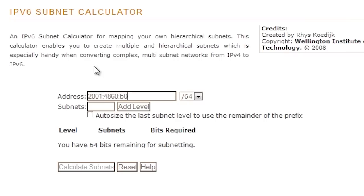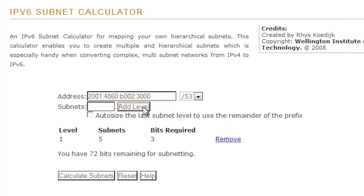To use the tool, enter in the address and select the network prefix. For the first level I will enter in 5 subnets and press add level. Notice that the number of bits used is shown.